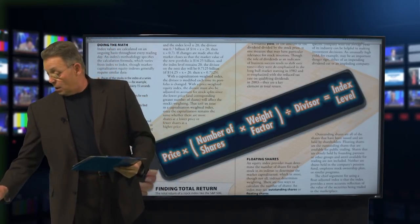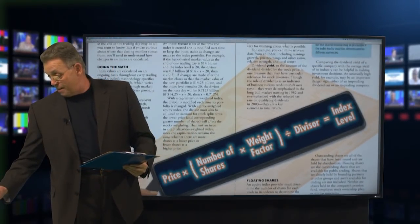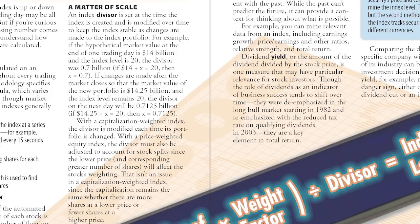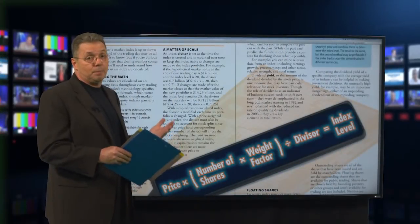The index divisor is set at the time the index is created and is modified over time to keep the index stable as changes are made to the index portfolio. For example, if a hypothetical market value at the end of the trading day is 14 billion and the index level is 20, the divisor was 0.7 billion. Is that good or bad? It depends on the index and what you're trying to get done.